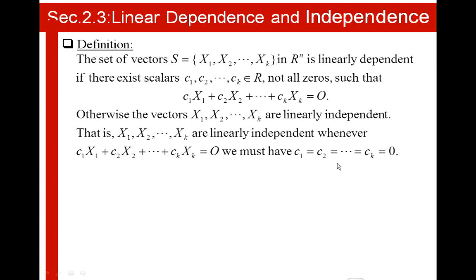which is the trivial solution. So whenever we have a trivial solution, it means that the vectors are linearly independent. If we have at least one of the C values different than 0, then the vectors are linearly dependent.